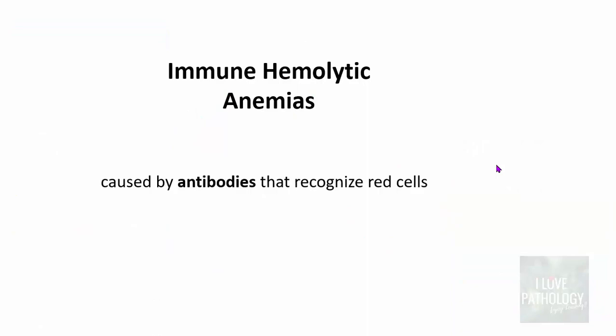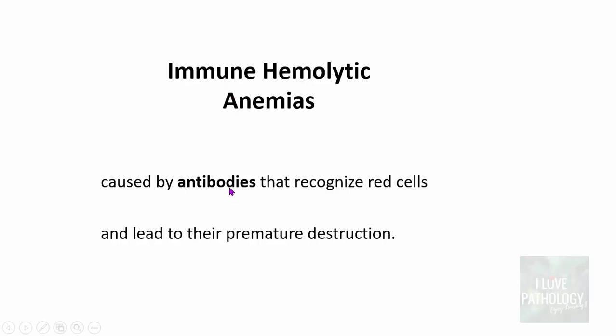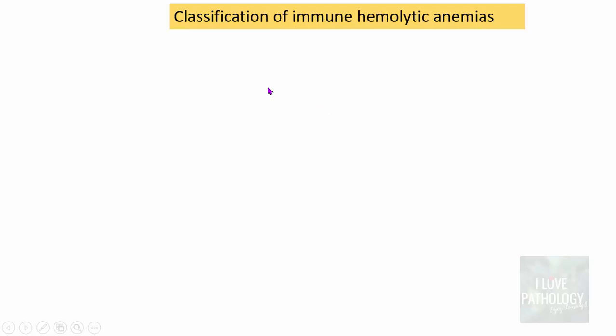What is Immune Hemolytic Anemia? It is anemia caused by antibodies that recognize red cells and lead to their premature destruction. It is 'immune' because it is caused by antibodies, and 'hemolytic' because there is premature destruction of erythrocytes resulting in anemia.